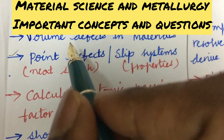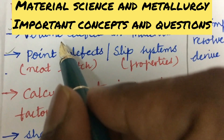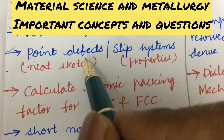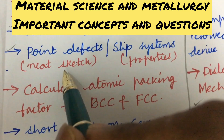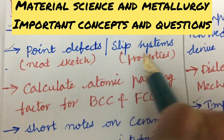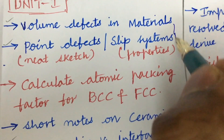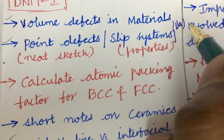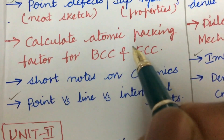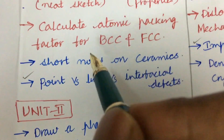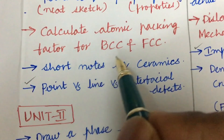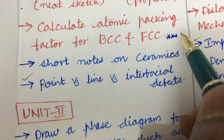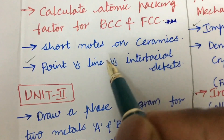The first and foremost question I have taken into consideration is volume defects in materials and point defects, along with its neat sketch, the slip systems, and the properties. From this we can expect one question for sure. Also, calculate atomic packing factor for BCC and FCC is said to be a very important gunshot question.